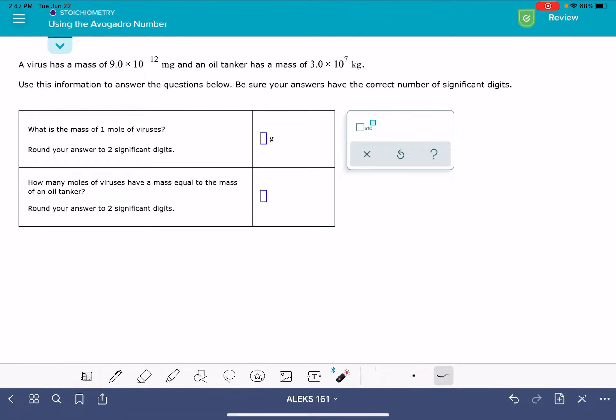In this video, I'll show you how to solve the Alex problem using the Avogadro number. Avogadro's number is 6.022 times 10 to the 23rd. You may have learned Avogadro's number is 6.02 times 10 to the 23rd. I like to express it with a little bit more significant figures than that.